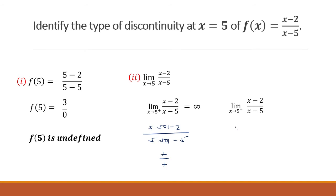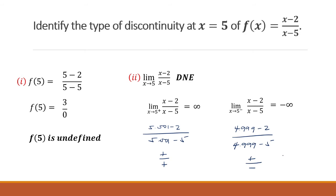For the left-hand limit, we use 4.999: (4.999 minus 2) over (4.999 minus 5), which gives positive over negative, so this is negative infinity. The limit at x equals 5 does not exist, and since we have infinite limits, this is infinite discontinuity.